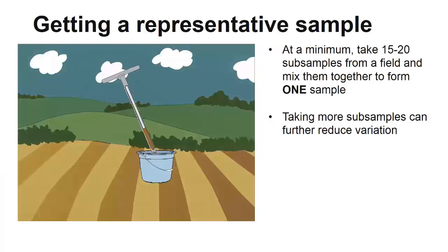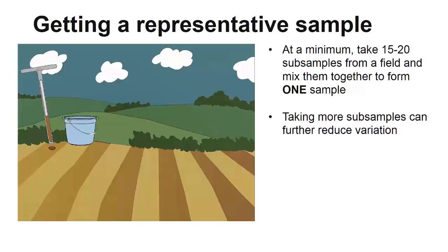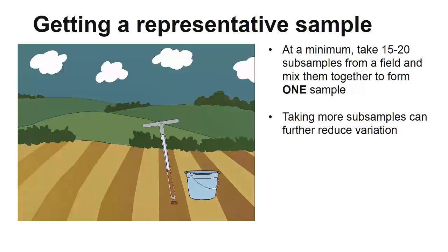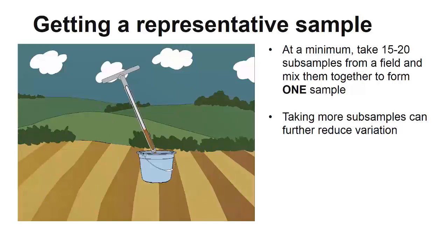Take a composite sample by taking a large number of subsamples and mixing them together to form one representative sample of a field. At a minimum, you want to collect 15 to 20 subsamples from an area that is 10 acres or less. Taking more subsamples can further reduce variation.